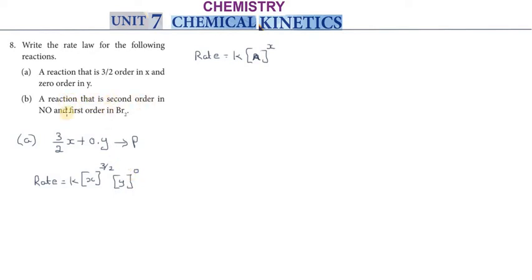Second will be a reaction that is second order in nitric oxide and first order in bromine. Part B: second order in nitric oxide, 2NO, plus first order into 1 into bromine.